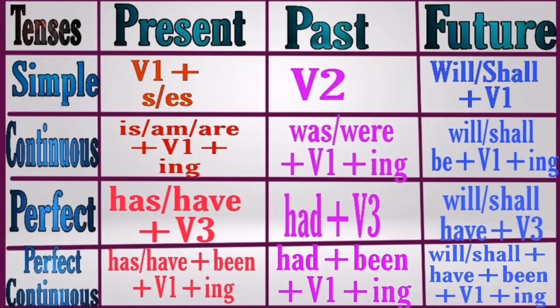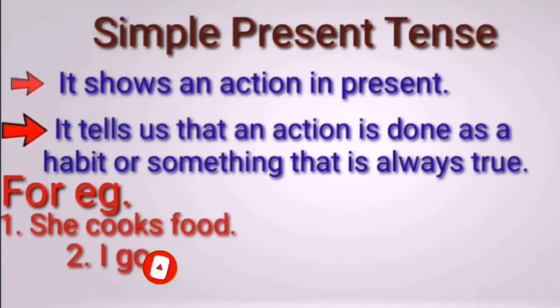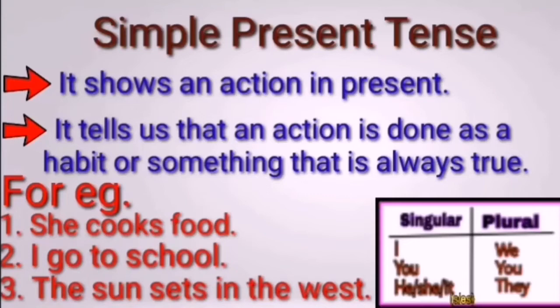Simple present tense shows an action in the present. It tells us that an action is done as a habit or something that is always true — a universal truth. For example: 'She cooks food' — it is a habit. 'I go to school' — also a habit. 'The sun sets in the west' — a universal truth. So simple present tense tells us about habitual actions and universal truths.